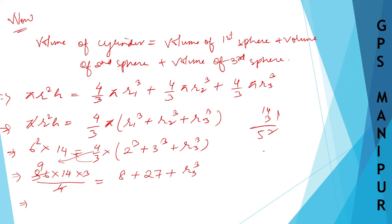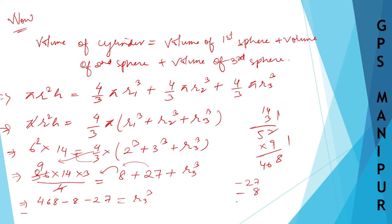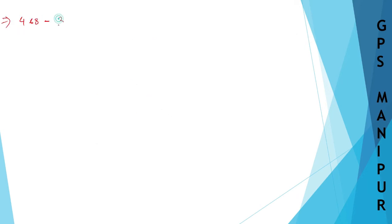Calculating 36 × 14 × 3 ÷ 4: 36 ÷ 4 = 9, then 9 × 14 × 3. 9 × 14 = 126, 126 × 3 = 378. So 378 = 8 + 27 + r3³.